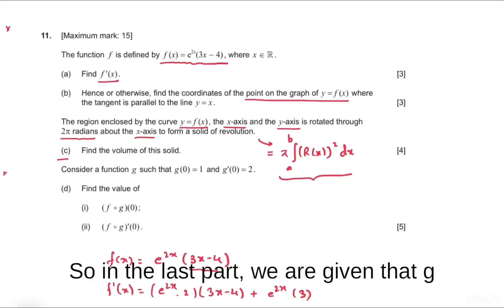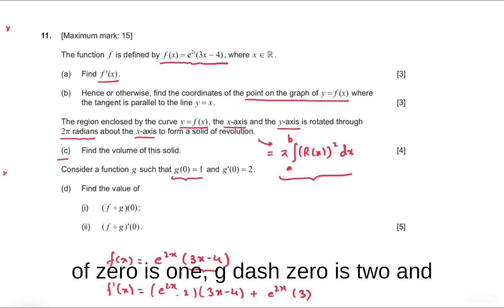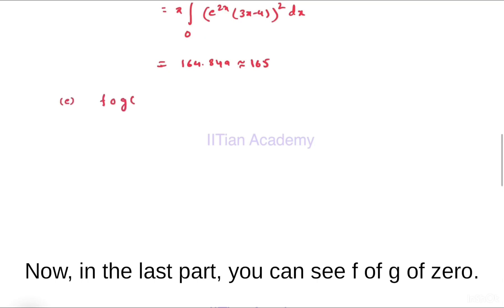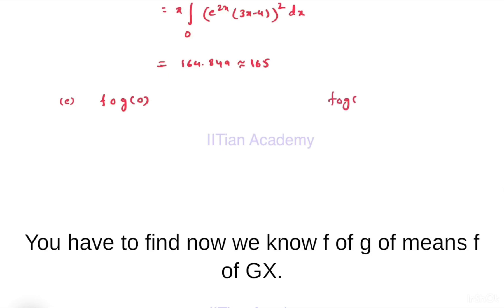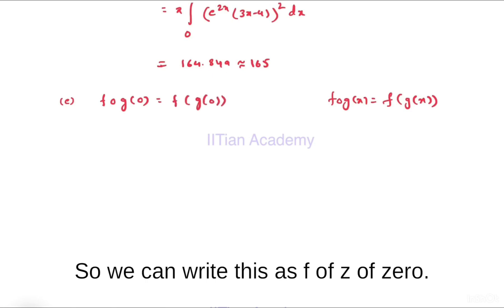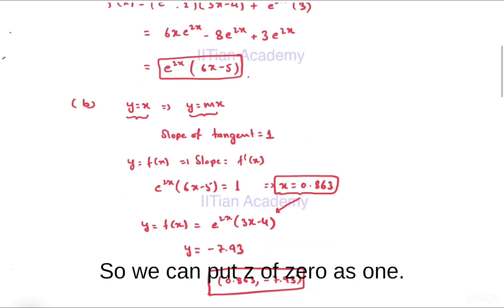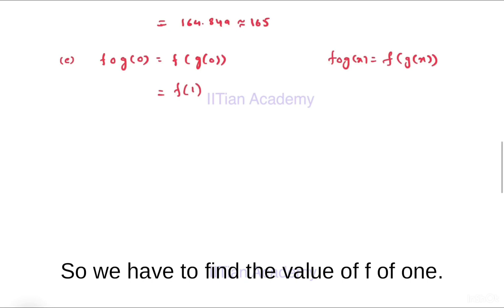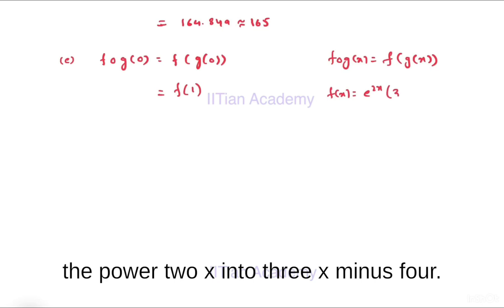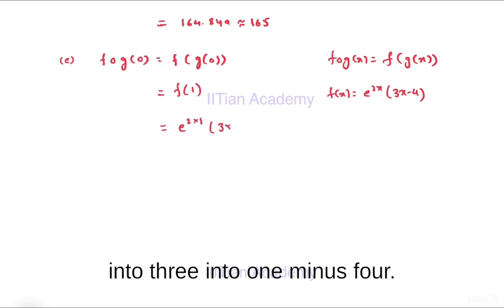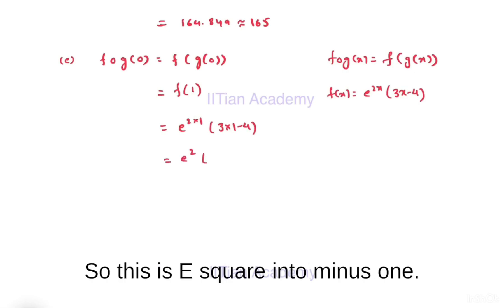Now in the last part, we are given that g(0) = 1 and g'(0) = 2, and we have to find the values of these composite functions. First, f(g(0)): we know f(g(x)) means f evaluated at g(x), so f(g(0)) = f(1) since g(0) = 1. f(x) = e^(2x)(3x - 4), so f(1) = e² × (3 - 4) = e² × (-1) = -e².